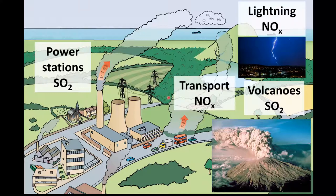Next we have the oxides of nitrogen. Nitrogen monoxide can be produced in internal combustion engines and by lightning. In an internal combustion engine, nitrogen and oxygen react to form nitrogen monoxide. This is made possible by the high temperature inside the engine.